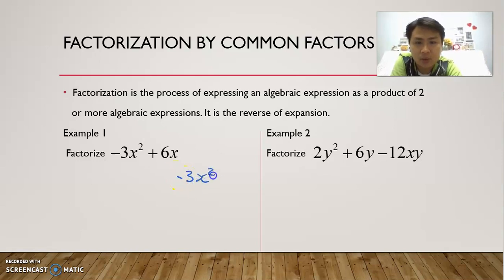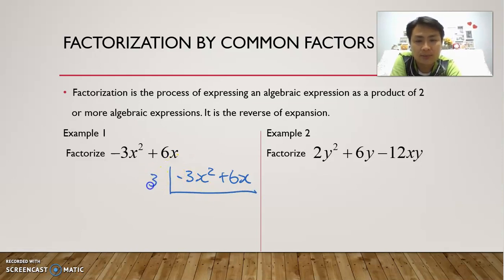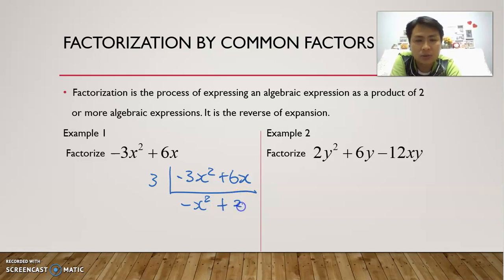Negative 3x squared plus 6x. When we are doing factorization, we want to look at what is common between the terms. The first term is negative 3x squared, the second term is plus 6x. We look at numbers first — what is common between 3 and 6? The common factor between 3 and 6 is 3. So we divide by 3.